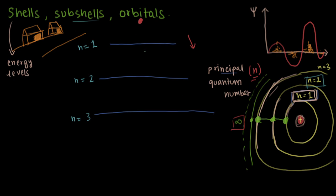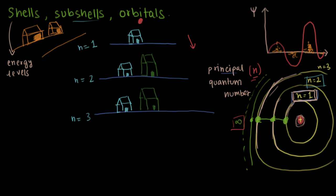Let us imagine that the first shell - the shell was the neighborhood, right? So the first neighborhood has one type of house. This is my best attempt at drawing a house - it has one type of house, mind that. The second shell will have that type of house plus one other type of house, which is bigger than the other. And the third shell will have both of those types of houses, plus another one, even bigger.